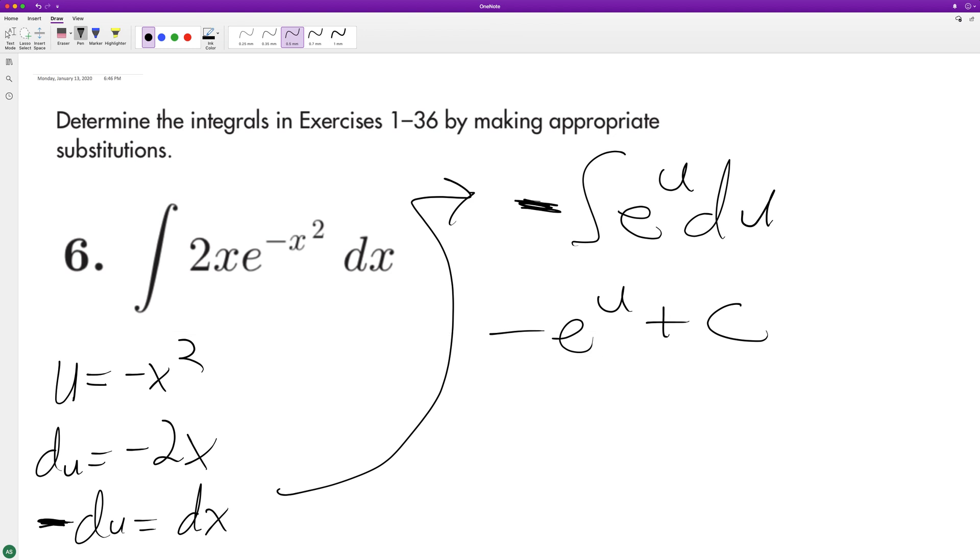So we just sub back in for our u, and we get negative e raised to the negative x squared